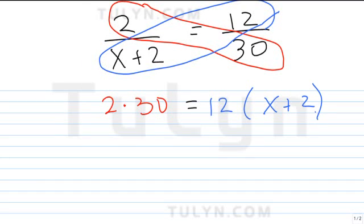What did I do here? I didn't put the x plus 2 first. I put the 12 first. Why? Because of distributive property. Everything comes back to haunting you.